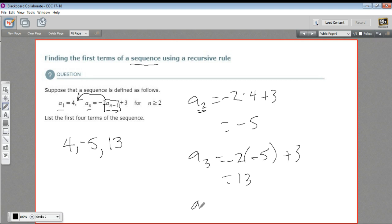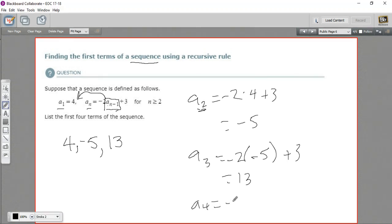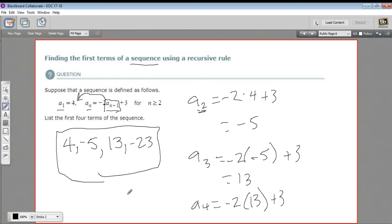And now let's find a sub 4. That's going to be negative 2 times the previous element, 13, plus 3. So negative 2 times 13, that's negative 26 plus 3. That's going to be negative 23. So that is how to find the terms in a sequence.